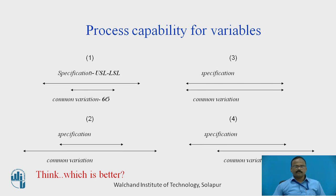There are four parameters. The first case shows specification limits — that is USL minus LSL — in relation to common variation, that is Six Sigma Dash. When USL minus LSL is greater than Six Sigma Dash, the process is within control. In the second case, USL minus LSL is smaller than Six Sigma Dash. In the third, USL minus LSL is equal to Six Sigma Dash. In the fourth, the specification has a different center from the common variation — the process is not centered according to the specifications and common variations.